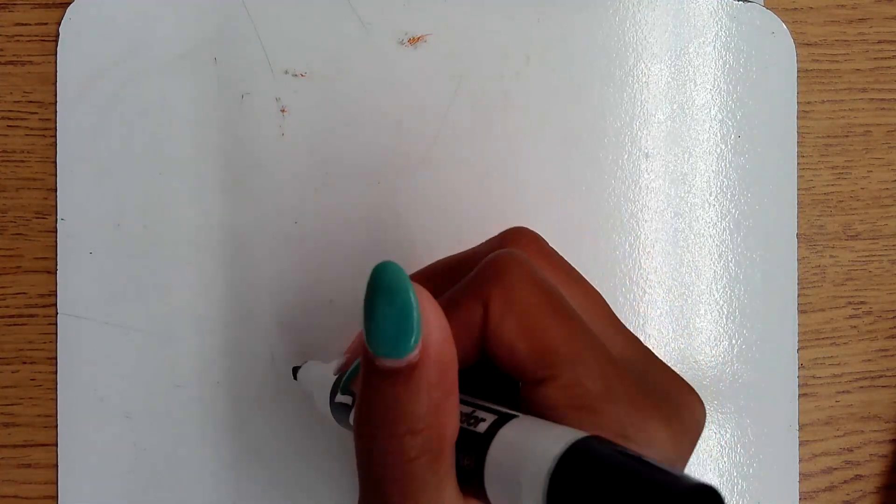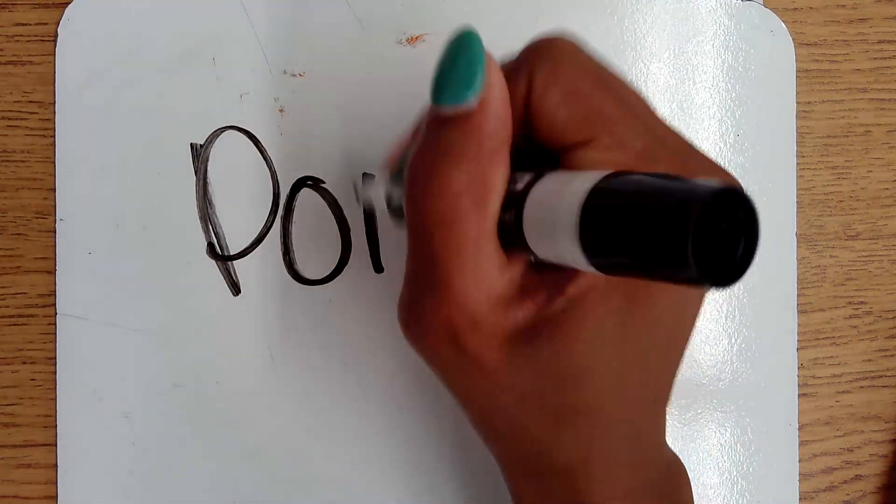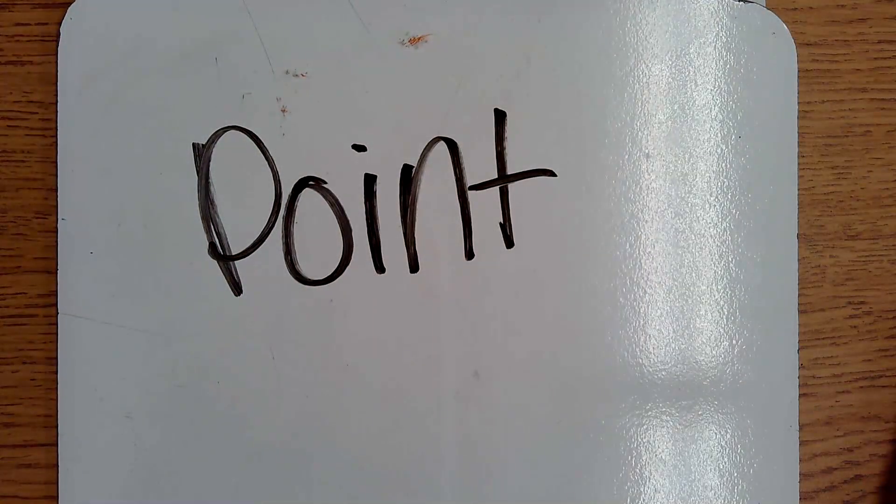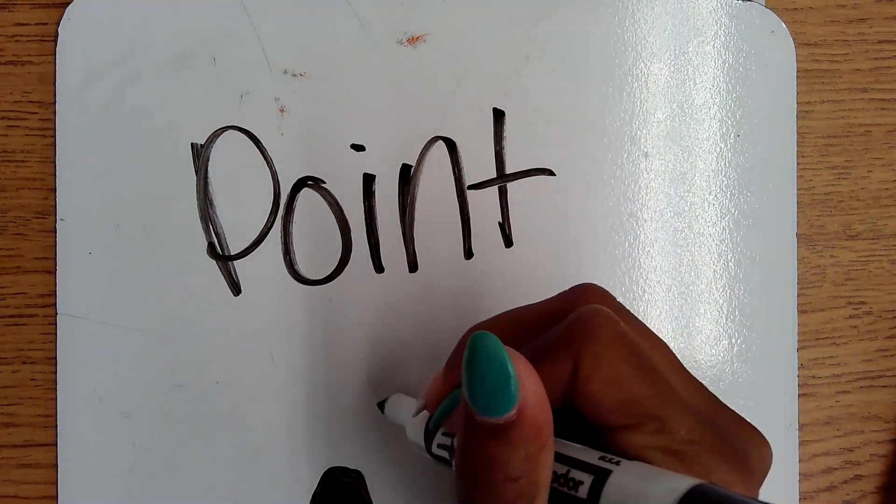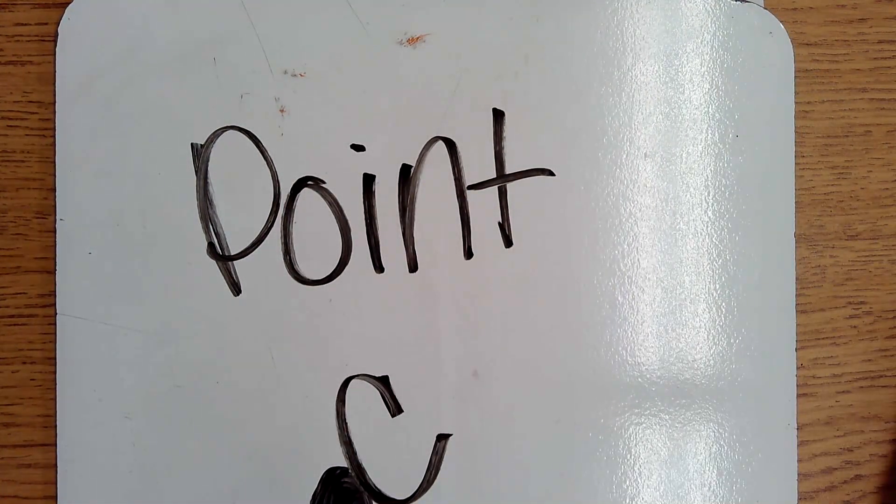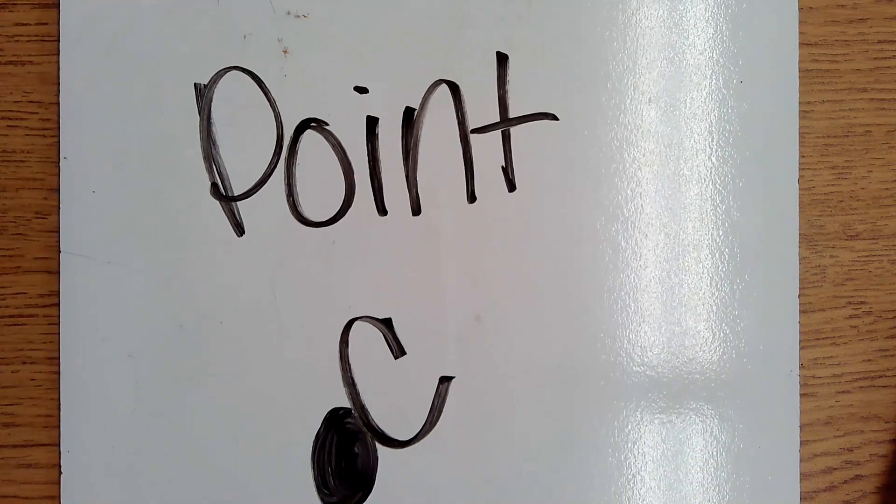The first vocabulary word is a point. A point is an exact location in space. You have your points, and normally your points have a letter name associated with it, so I could call this point C.